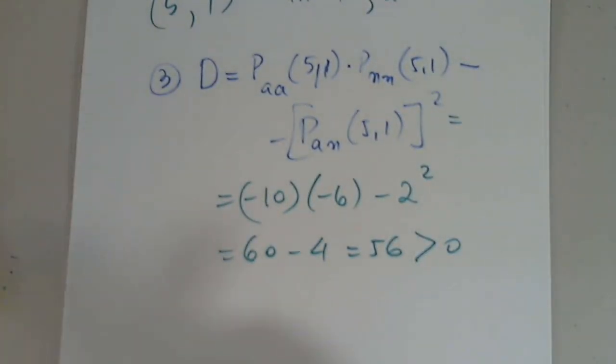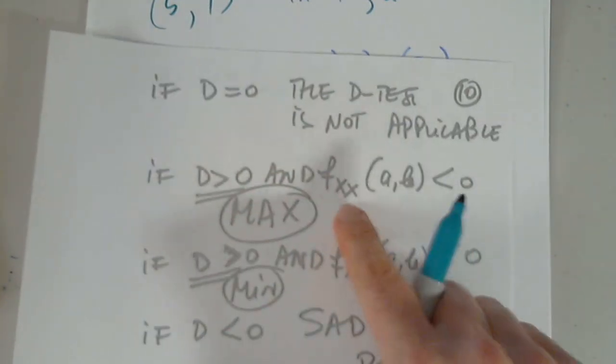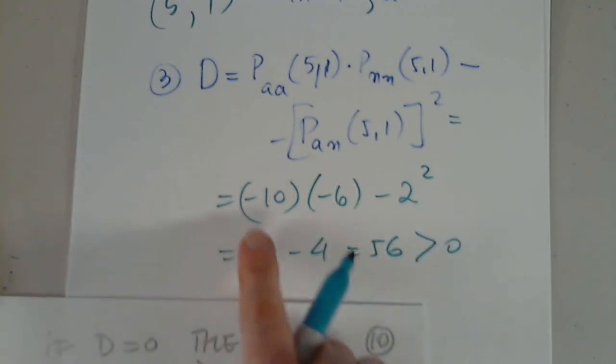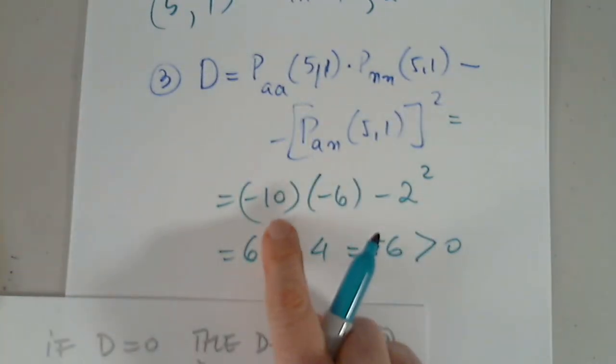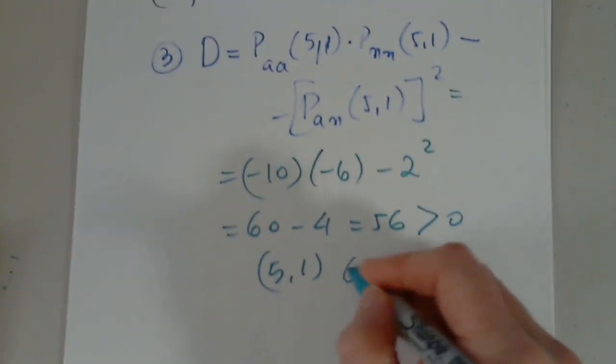When d is a positive number, I know there is either a max or a min. All I have to look at is fxx. fxx is this, which is negative 10. Therefore, 5 comma 1 indeed gives a maximum.